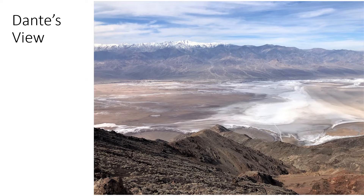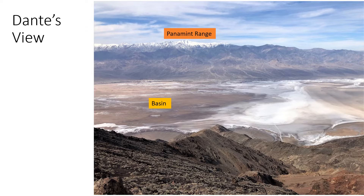The best way to get an overview of Death Valley is to go to Dante's View. There you will be one mile above the floor of the valley, or the basin, and about 20 miles from the range, the snow-capped Panamint Mountains. If you look to the north, you might get a view of the Sierras and the highest point in California, Mount Whitney. At the same time, you're looking at the lowest point in California, Death Valley.